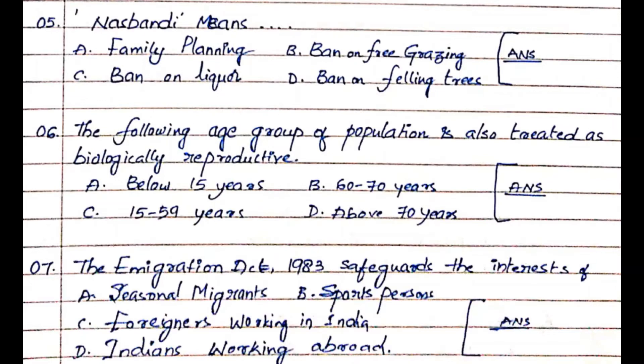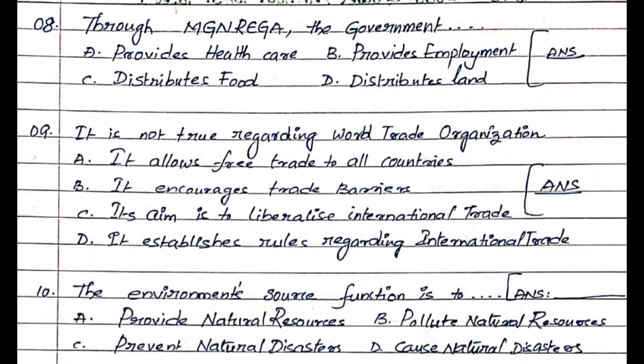Question number 7: The Immigration Act 1983 safeguards the interests of. Option A. Seasonal Migrants, Option B. Sports Persons, Option C. Foreigners Working in India, Option D. Indians Working Abroad. The answer is Option D. Indians Working Abroad.